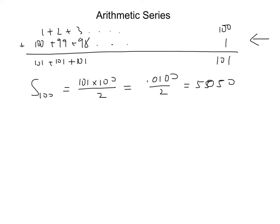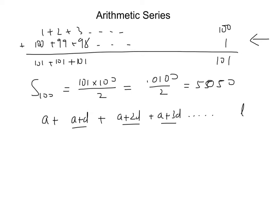Now if we use algebra instead of numbers, we have the first term A — that's the conventional letter for the first term. The second term is A plus D, the third is A plus 2D, then A plus 3D, and it goes on to the last term, which we call L. If we do the same thing — writing L at one end and A at the other — and add them together then divide by 2, we get that the sum of N terms is N over 2 times (A plus L). That's a useful formula.